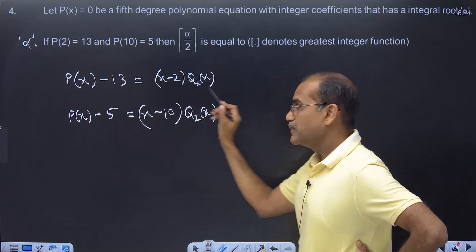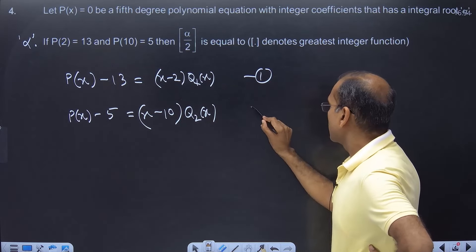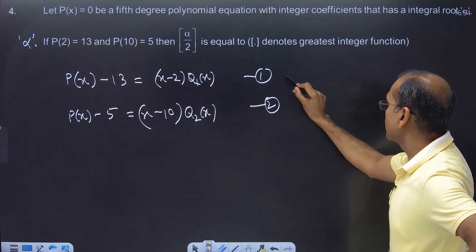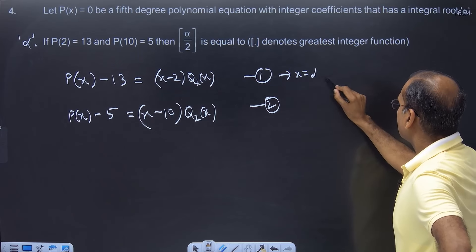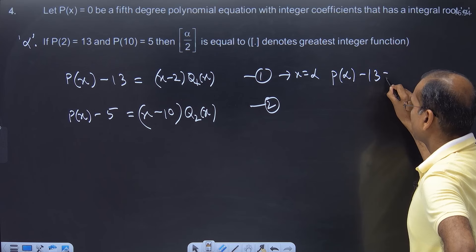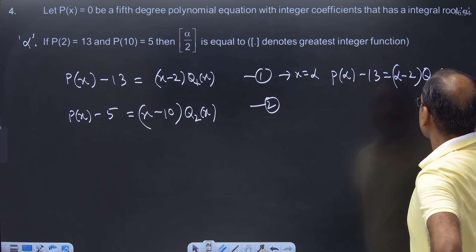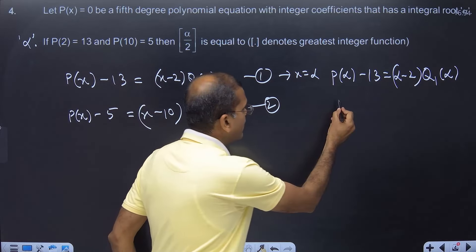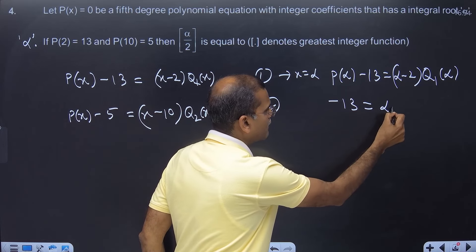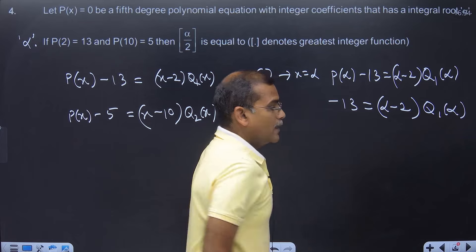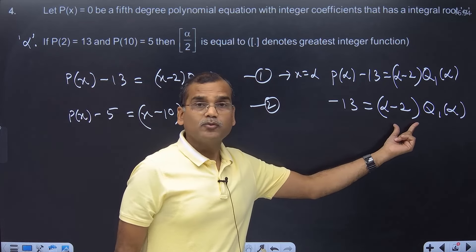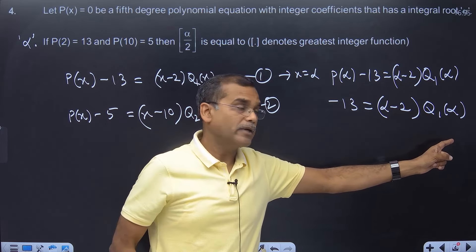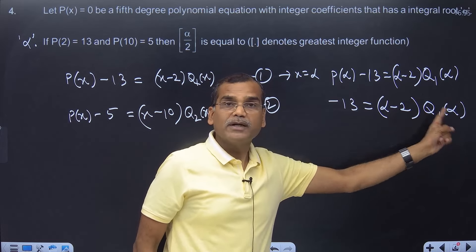Understand that equation 1 is an identity, equation 2 is an identity, so I can do anything. I go to the first equation and put alpha in place of x. Since you told me alpha is the root of P(x), so P(alpha) will be 0. So I get minus 13 equals (alpha minus 2) times Q1(alpha). Now imagine, alpha minus 2 is an integer, Q1 has all integer coefficients, so putting integer alpha gives an integer. So the product of 2 integers equals minus 13.